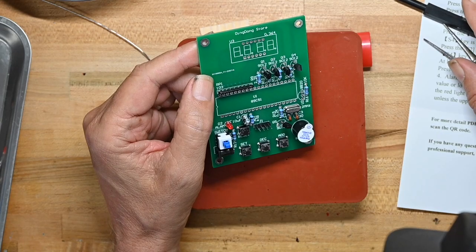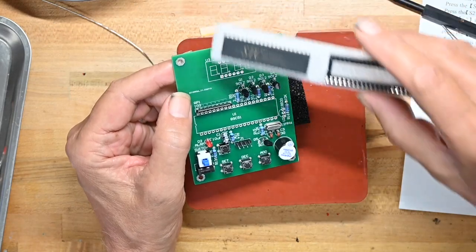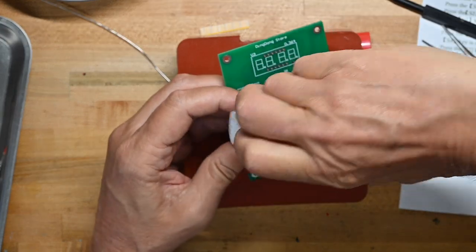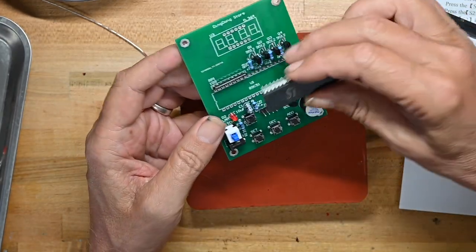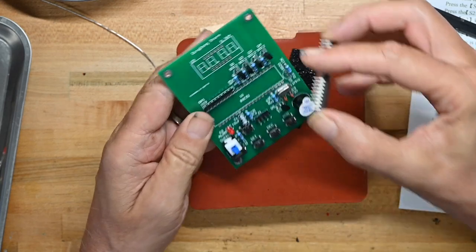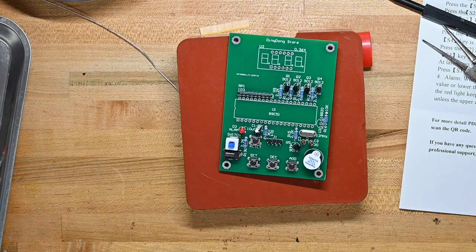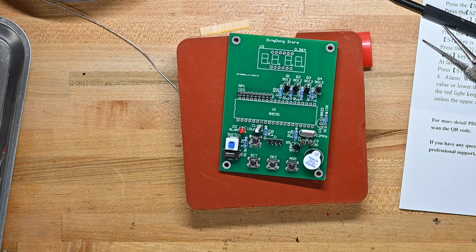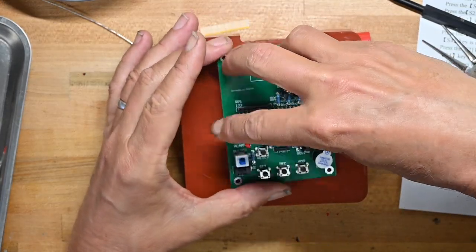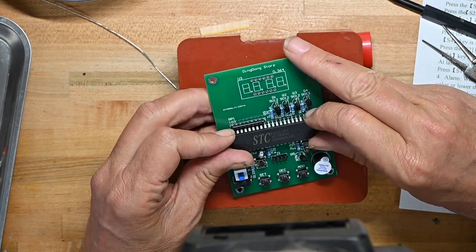And now it is saying install the socket and then the microcontroller. I'm not going to do that, because I am never going to program this microcontroller. And I am never going to replace it. So I'm just going to solder it down to the board directly, and put the socket in my spare parts bin. Because it's always nice to have spares of commonly used things like sockets.